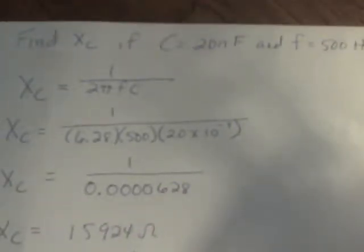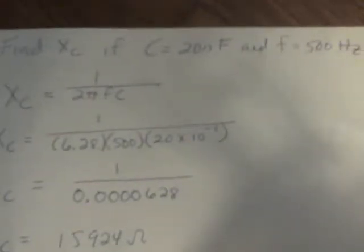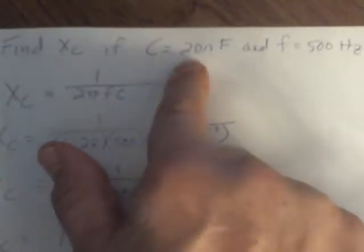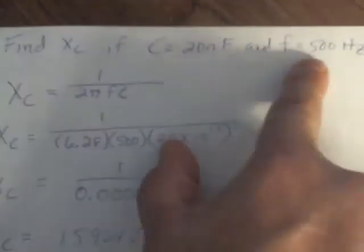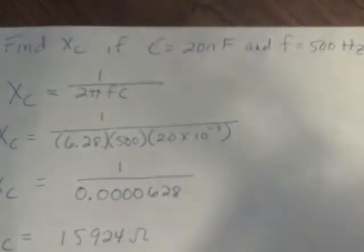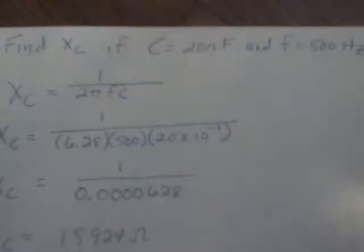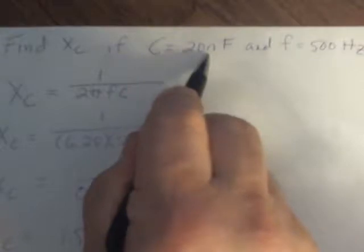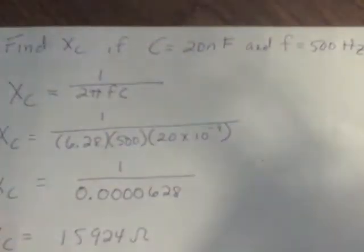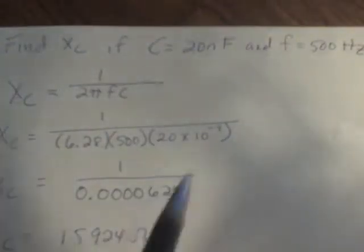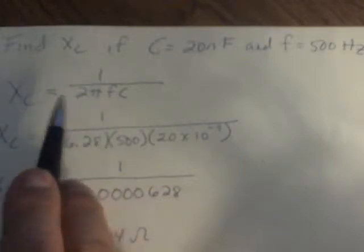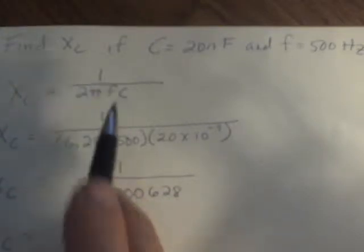Now, calculators are all different. If I'm looking at finding X of C and I've got C is 20 nanofarads and F is 500 hertz, hertz has no prefix. But there is a prefix with farads and nano. So I write down my formula where X of C is 1 divided by 2 pi FC.